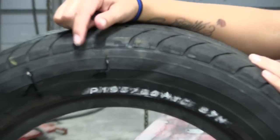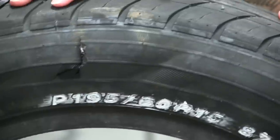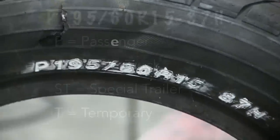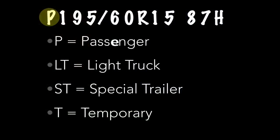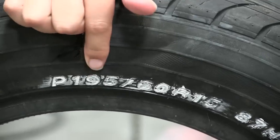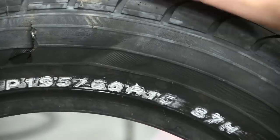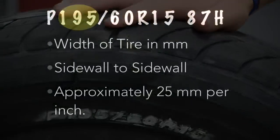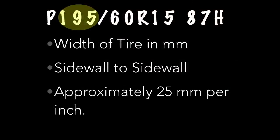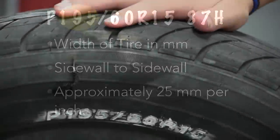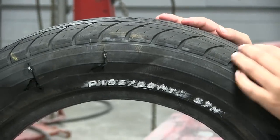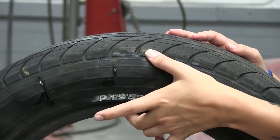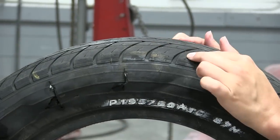Now the P stands for a passenger vehicle. This P195 is the width from side to side. The 60 is your percentage of the sidewall here to the width of the tire.